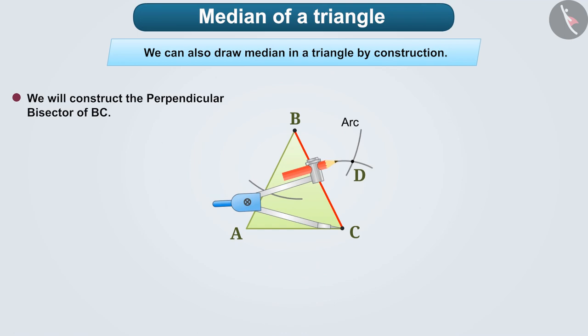Similarly, we will also draw an arc under the side BC which will intersect the already formed arc at point E.